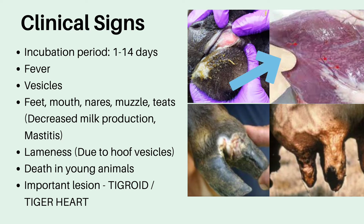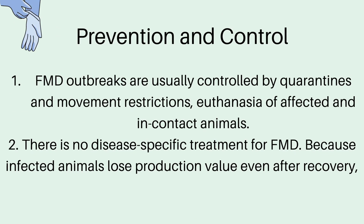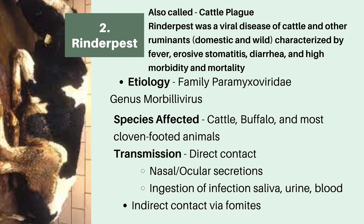The tiger heart refers to white streaks found in the heart of the affected animal on necropsy. As for prevention and control, FMD outbreaks are usually controlled through quarantines and movement restrictions. In case of an affected herd, it is usually euthanized, and in-contact animals are also euthanized. There is no disease-specific treatment for FMD because infected animals lose production value even after recovery, making them no longer useful to the owner.